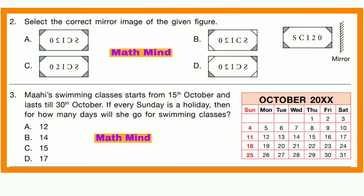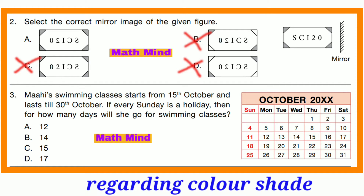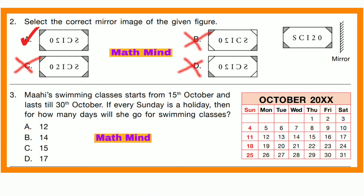Question number 2. Select the correct mirror image of the given figure. This is the given figure and this is the mirror. The shining surface is towards the figure. Option C is cancelled. Option B is cancelled. Option D is also cancelled. So option A is correct. This is the correct mirror image.